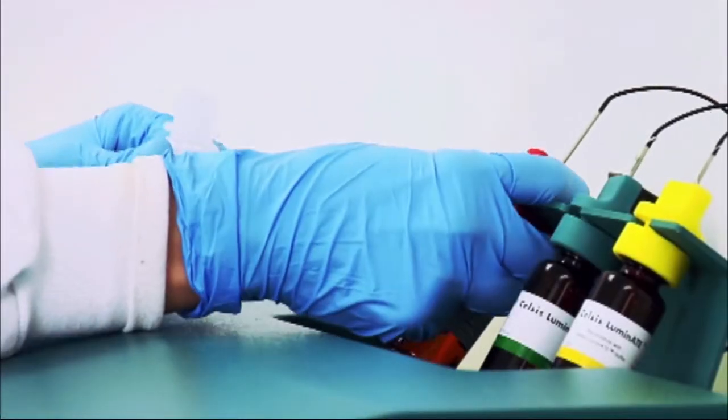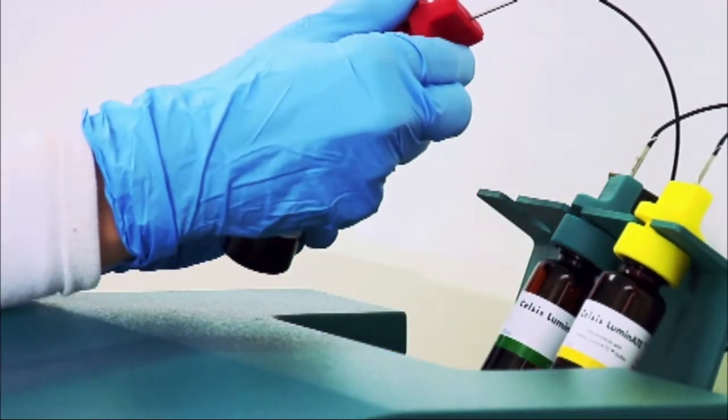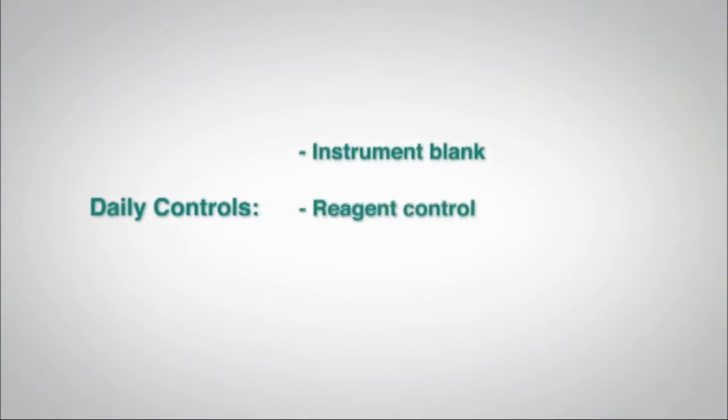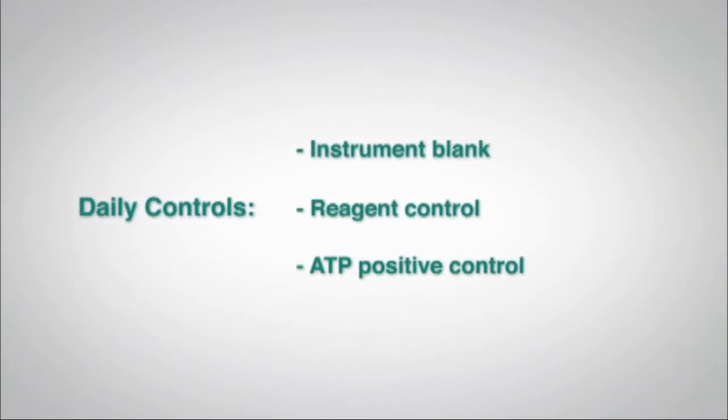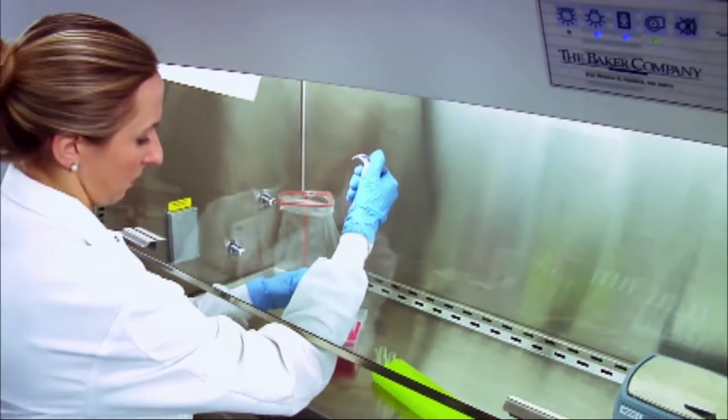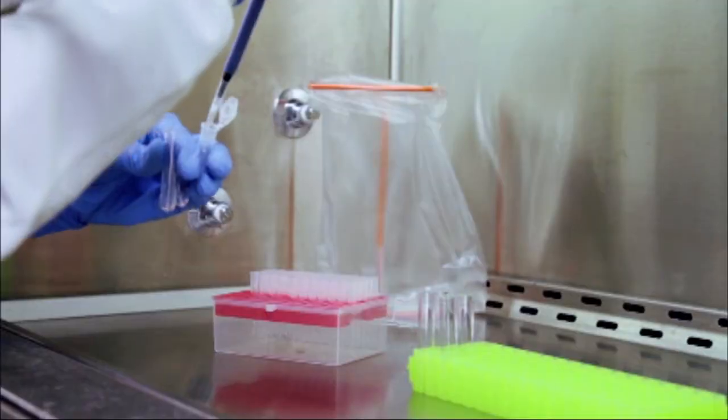When finished, remove the rinse bottles and load the room temperature reagents. Good lab practices include running daily controls of an instrument blank, reagent control, and an ATP positive control. These ensure that there is no light penetrating the instrument and that the instrument and reagents are working properly.